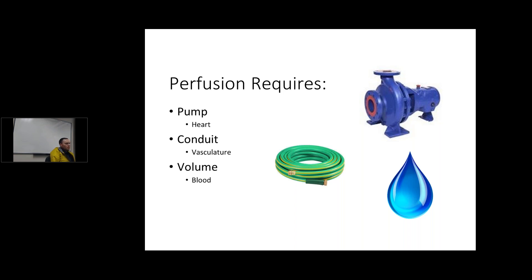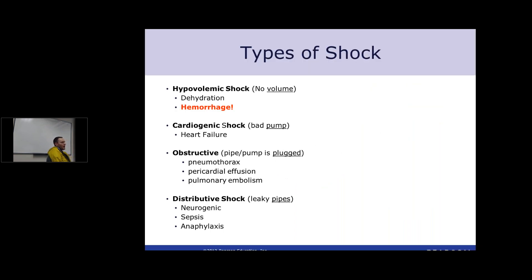Types of shock: hypovolemic shock is dehydration and hemorrhage — obviously you don't have volume, and those are the reasons why. Cardiogenic shock is a bad pump — most of the time it's heart failure. Chronic heart failure is a pump that's been used poorly for a long time and eventually gives out. Acute heart failure is a STEMI until proven otherwise — it's a heart attack.